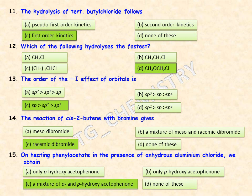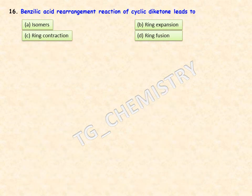Benzylic acid rearrangement of a cyclic diketone leads to which product? The benzylic acid rearrangement gives a product with ring contraction for cyclic diketones, so option C — ring contraction — is the right answer.